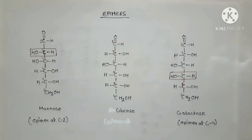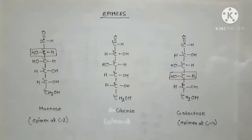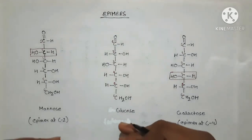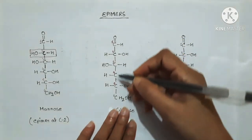Epimers are compounds having the same chemical formula but there is a difference in the spatial arrangement around any one of the asymmetric carbon atoms. That means these two compounds have the same chemical formula, but the groups attached to any one asymmetric carbon atom have a different spatial arrangement. We can better understand this with the example of glucose.